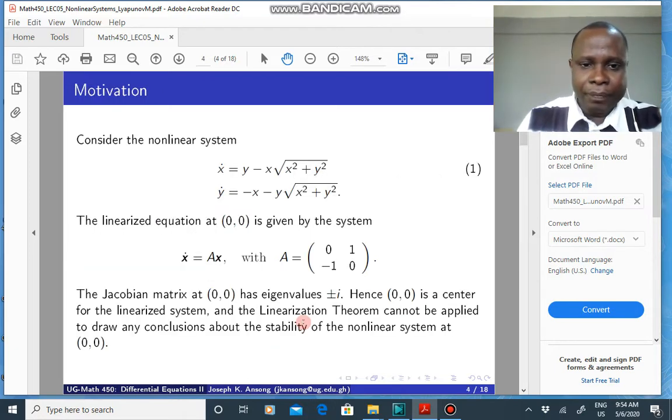We'll start off with some motivating example. So you have a nonlinear system given by this. This system here, 0,0 is, of course, you can easily check that 0,0 is an equilibrium point of the system. If you linearize it using the previous approach, you'll find that the Jacobian matrix is given by this matrix here.